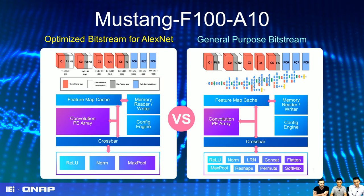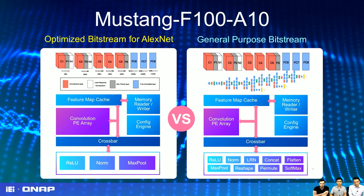A general-purpose bitstream needs to be compatible with more topologies, so its convolutional array computing block is smaller. By optimizing the bitstream for a specific topology — such as with the optimized bitstream for the Mustang F100 — you can make the convolutional array larger and achieve better performance. That's why the FPGA card's flexibility allows you to update the bitstream for a special purpose and get better performance.